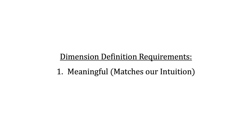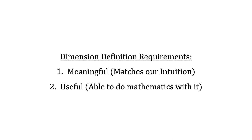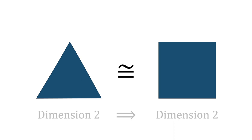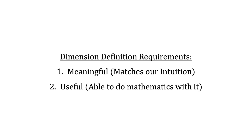The second requirement for a good definition of dimension is that it should be useful — something we can do mathematics with. Returning to our discussion on homeomorphisms, this means that if we can show two spaces to be homeomorphic, then the two should also have the same dimension. So if the triangle has two dimensions, then the square should also have two dimensions. The exciting thing is that there are quite a few different ways of looking at dimension that meet these two requirements.